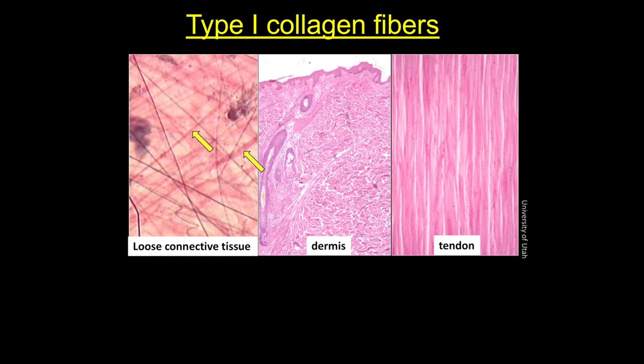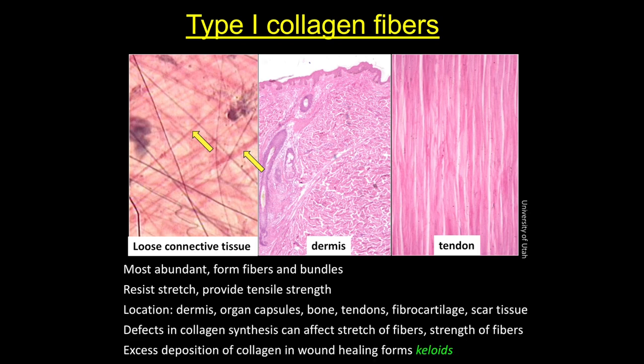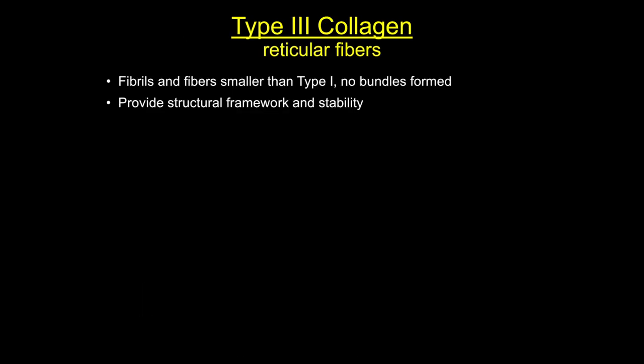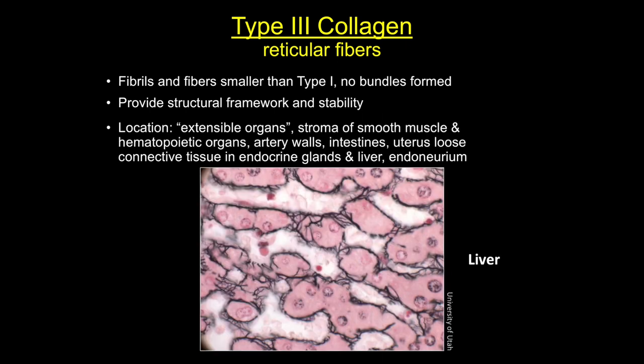Type 1 is the most abundant fibril-forming collagen. It forms large bundles that stain dark magenta with H&E and blue with trichrome stain. These are the thickest fibers and are found forming structures such as the dermis, tendons, bone, and organ capsules — places that require resistance to tension. Type 2 is found in cartilage and the vitreous body of the eye and functions to give resistance to pressure. Type 3 collagen forms thinner fibers that bind silver and are found in skin, muscle, and blood vessels along with type 1, and the function of these fibers is maintenance of extensible organs such as the liver or stomach.